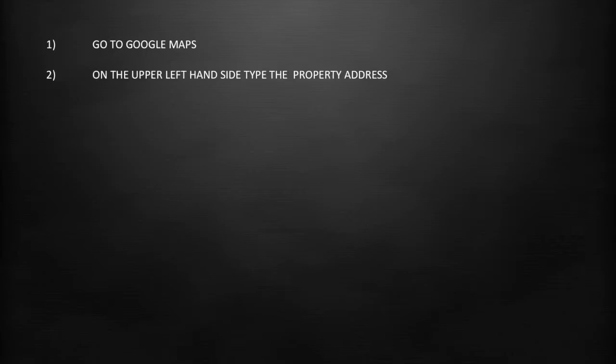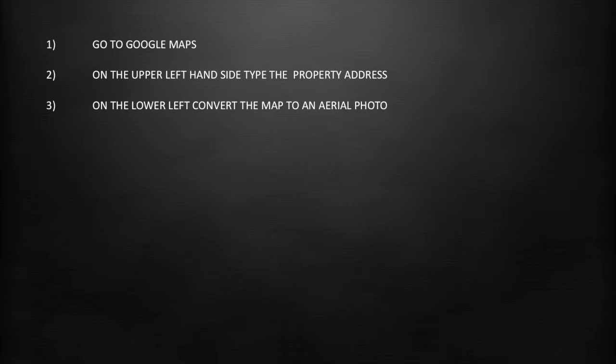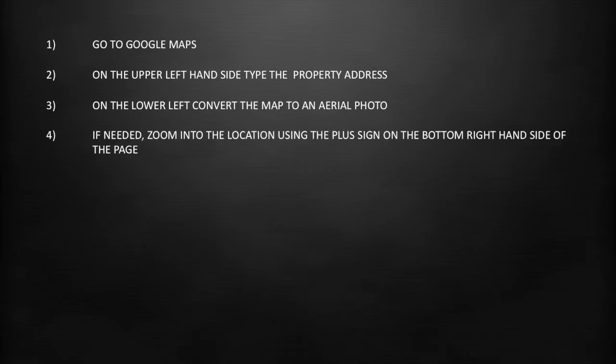Let's review the simple steps required to get GPS coordinates from a Google map. Number one is to go to Google Maps. Number two is to go to the upper left hand side and type the property address. Number three, on the lower left side, convert the map to an aerial photograph.